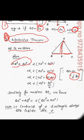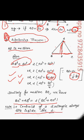Similarly, Apollonius' theorem applies for median BE as well. Whatever the type of triangle — scalene, obtuse, acute, or right angle — the centroid of the triangle always lies inside the triangle; it will never lie outside.